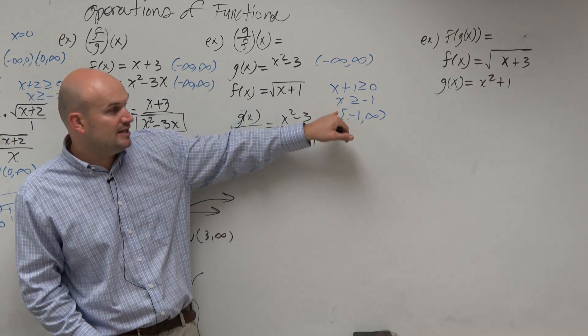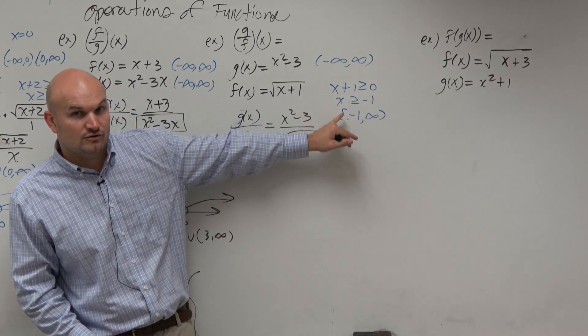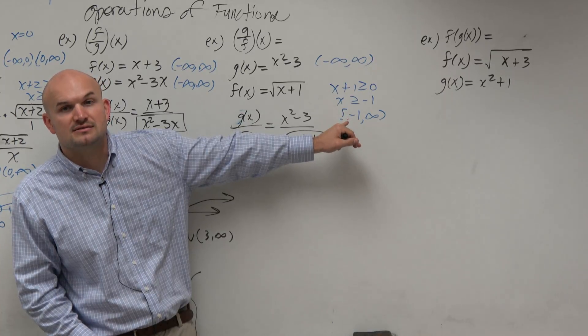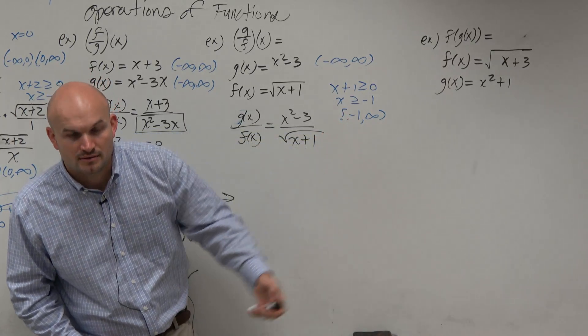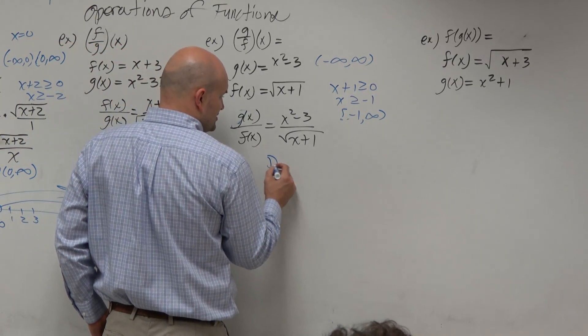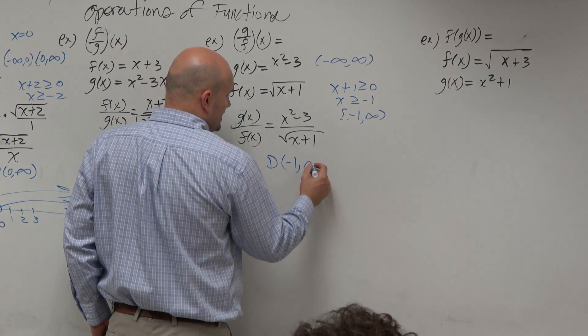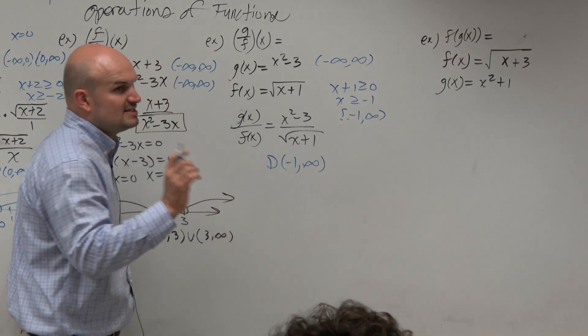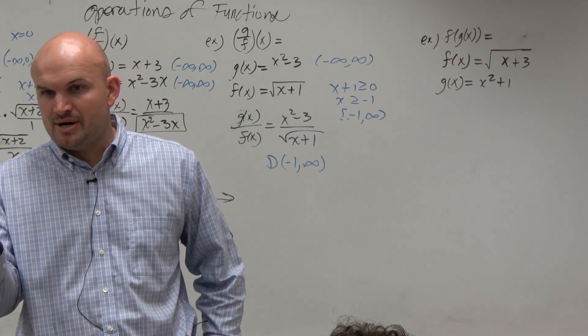X still has to be greater than or equal to negative 1 to infinity, or yes, from negative 1 to infinity. Can you change it to a parenthesis? But yes, what we want to do to make this correct is just say, it's still going to be negative 1 to infinity, but we're just going to say negative 1 is not included anymore because it's in the denominator.